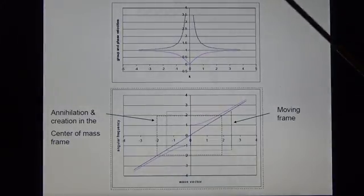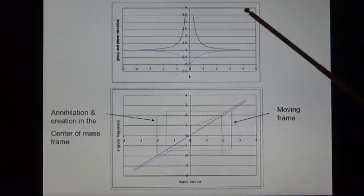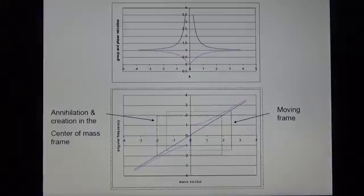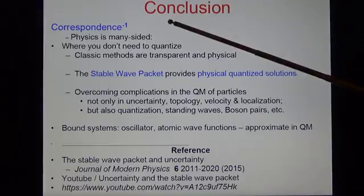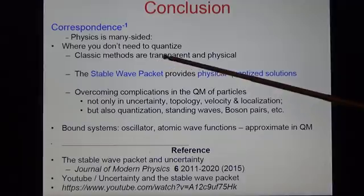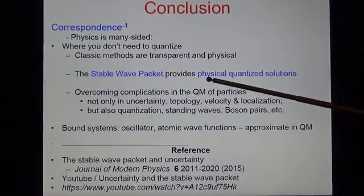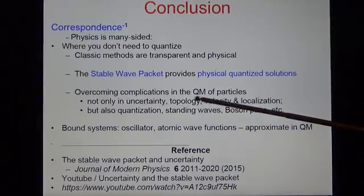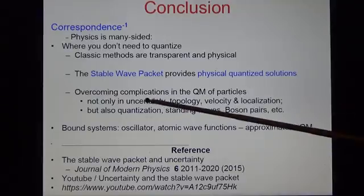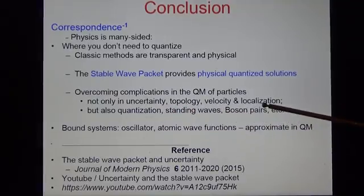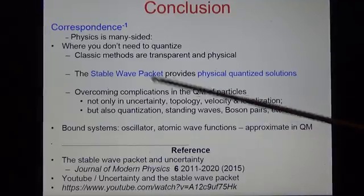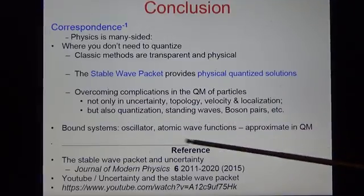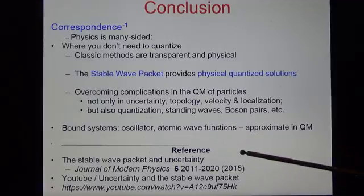You can derive other properties from this representation, including annihilation and creation dynamics, which I only have time to mention. I do not have time to mention a great many other applications of the stable wave packet. But my conclusion is that physics is many-sided, where you don't need to formally quantize. Classical methods are transparent and physical. The stable wave packet provides physical quantized solutions, overcoming complications in the quantum mechanics of particles. Not only in uncertainty, or topology, or velocity, or localization, but also in quantization in standing waves and boson pairs. But you may notice that in bound systems such as the harmonic oscillator and atomic wave functions, the quantum mechanical solutions are approximately right.